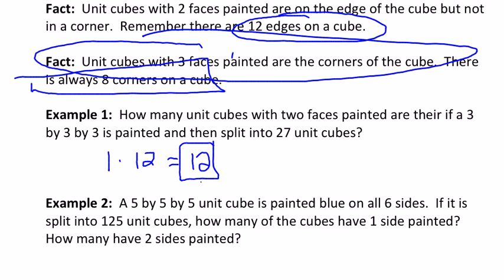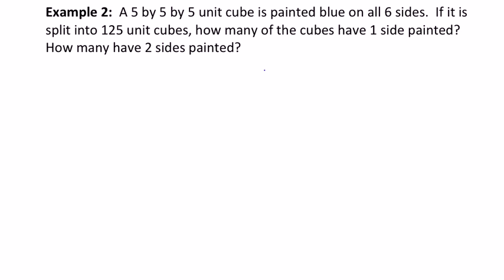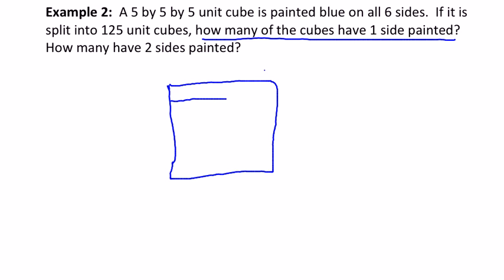Now we move into a five by five by five example, which is considerably harder. And the first thing it says, if it's split into 125 unit cubes, how many of the cubes have one side painted? Well, if you want one side painted, remember, that's just going to be how many are on the interior of one of the faces, not on an edge.